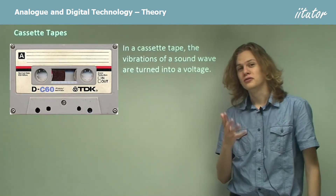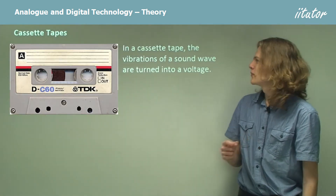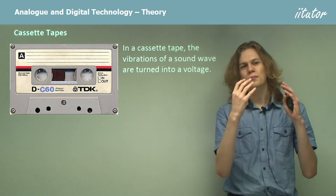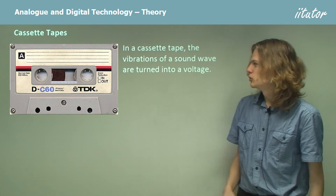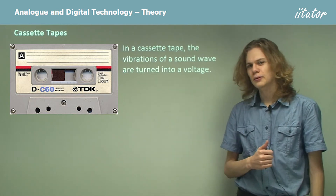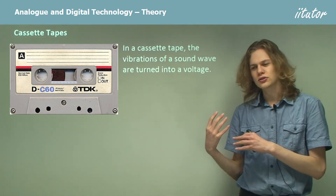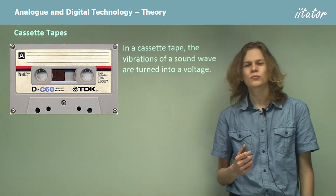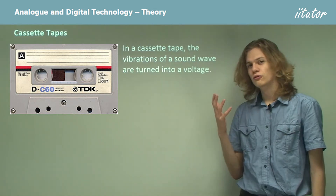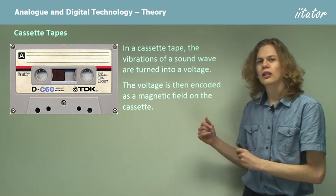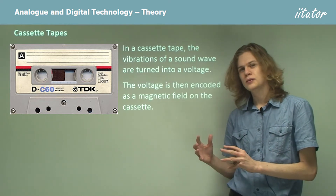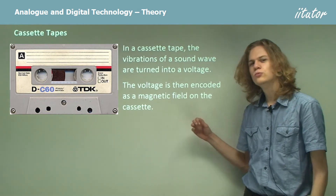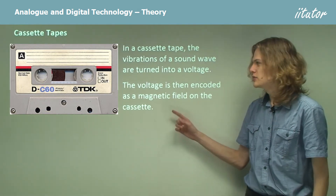In a cassette tape — another piece of fairly outdated technology — we have vibrations of a sound wave encoded on a magnetic piece of tape, which is wrapped up inside the cassette. In order to make this conversion, we first represent the sound wave as a voltage using a microphone. We can then use electromagnetism to turn that voltage into a magnetic field, and this magnetic field is what is encoded on the tape inside the cassette.